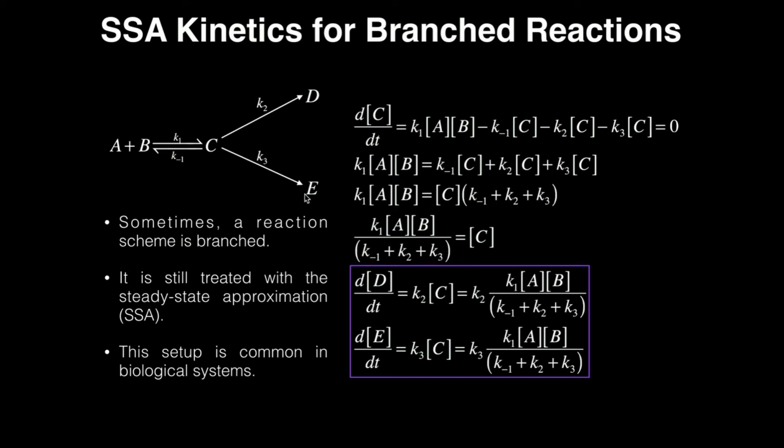And then for the rate of formation of E, I'm going to have a very similar expression. It's going to be K3 from here times this whole thing, K1 times A times B divided by the sum of these three rate constants. And so what you can see in this particular setup, the only difference between these two rates is the rate constant that's out in front of this whole term right here.